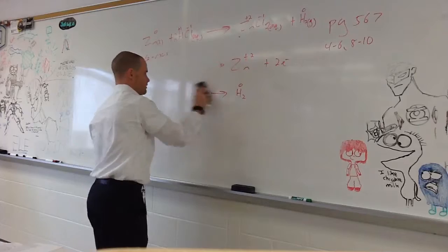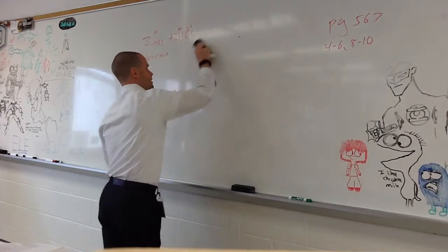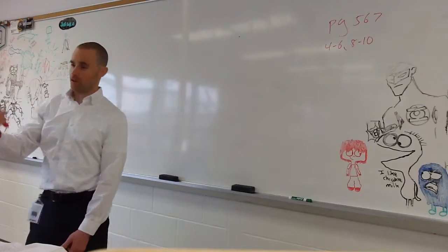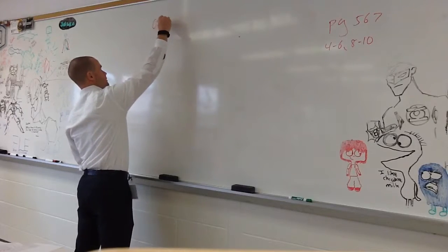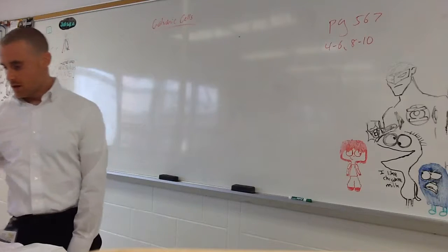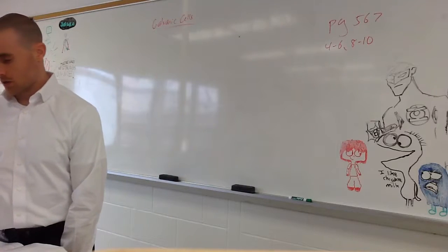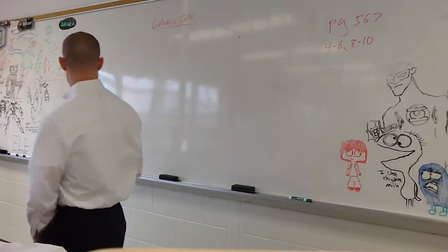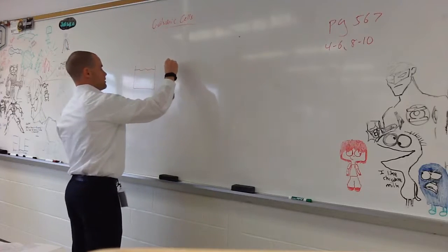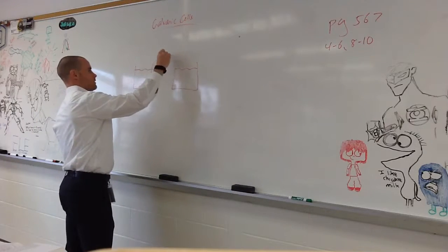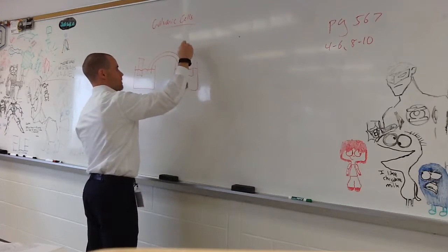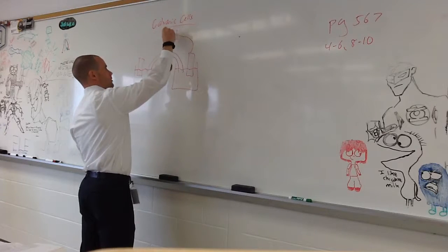We'll start talking about galvanic cells. Do galvanic cells produce energy or use it? They produce it. So they're converting chemical energy to electrical energy. Galvanic cells convert chemical energy into electrical energy. Let's sketch one in our notes. You've got a solution here, a solution here, and that thing in the middle — what's that called? A salt bridge.